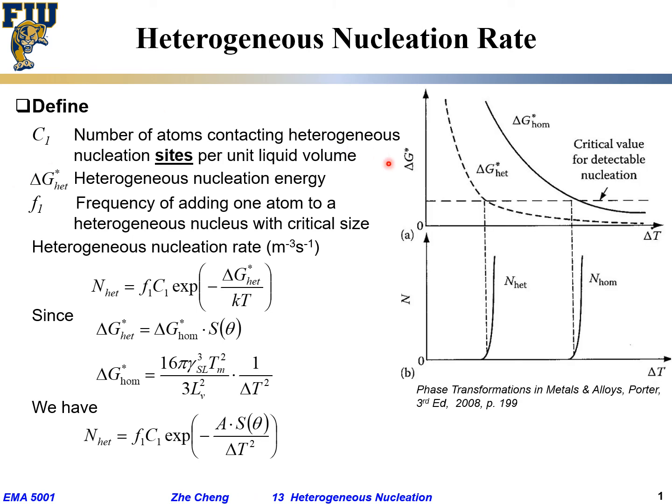So if we have this, if we are going to plot both ΔG* and the nucleation rate versus ΔT, your so-called undercooling. We got ΔG* term goes like this. We have two curves. One is for ΔG* homogeneous.